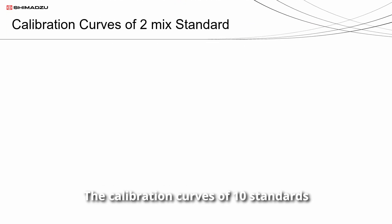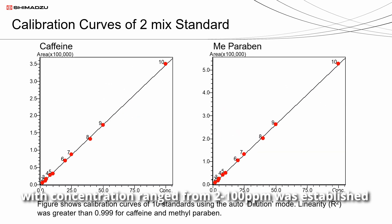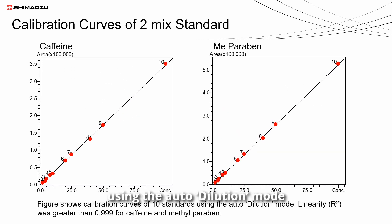Calibration curves of 10 standards with concentration range from 2 to 100 ppm were established using the auto dilution mode. Excellent linearity was achieved with R² greater than 0.999 for caffeine and methylparaben.